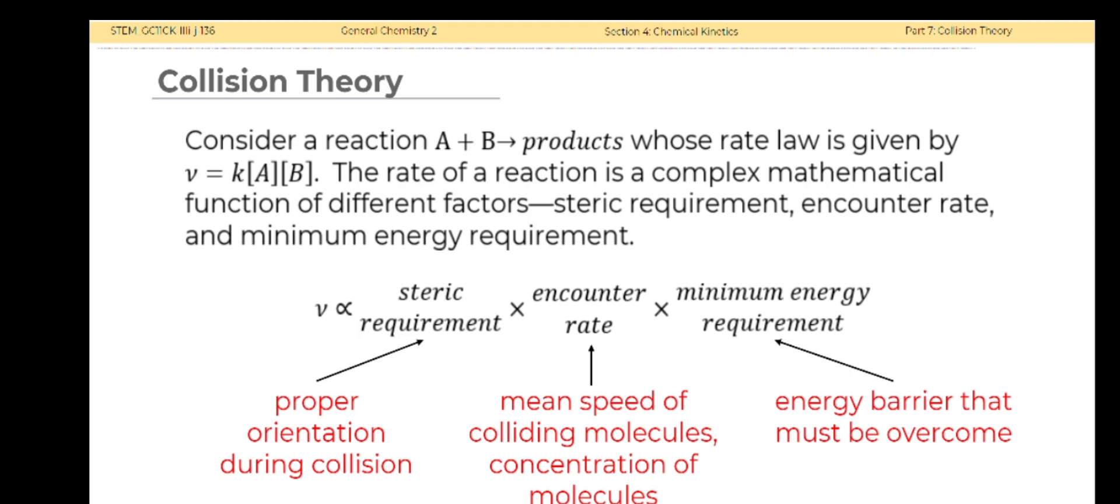Consider a reaction A plus B forming products whose rate law is given by rate equals K times concentration of A times concentration of B. The rate of a reaction is a complex mathematical function of different factors: steric requirement, encounter rate, and minimum energy requirement. The steric requirement describes the proper orientation of A and B during collision.